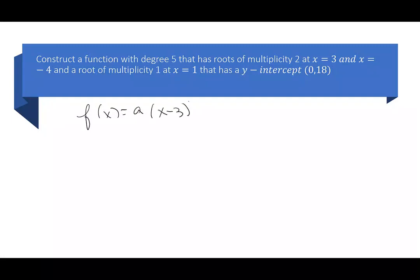I have (x minus 3), but that's multiplicity 2. I have (x plus 4), also multiplicity 2. And then (x minus 1), which is multiplicity 1.